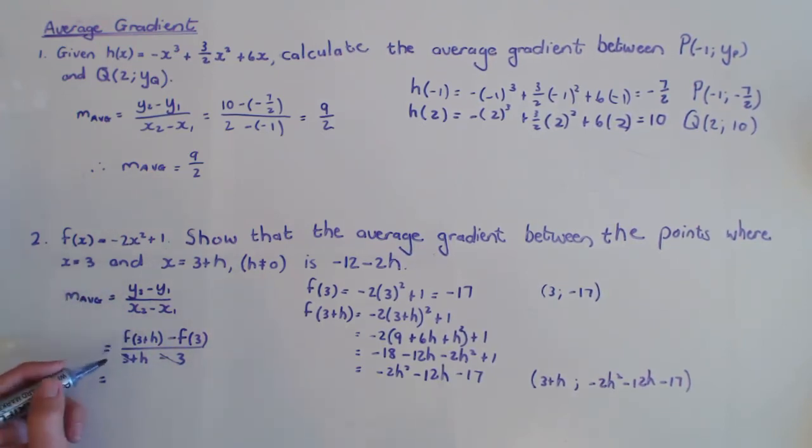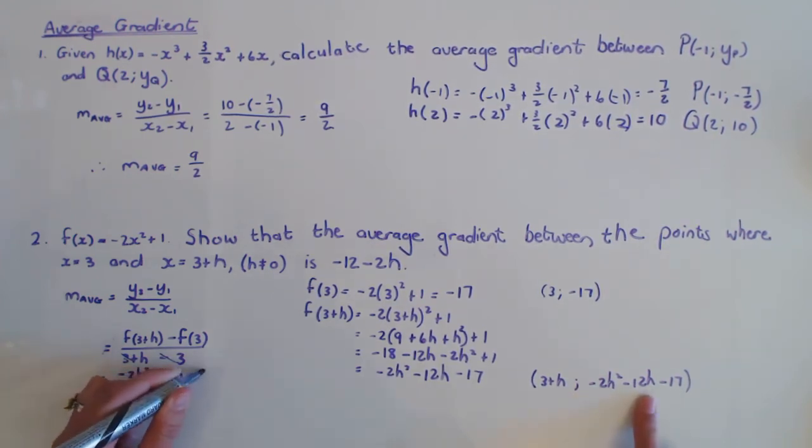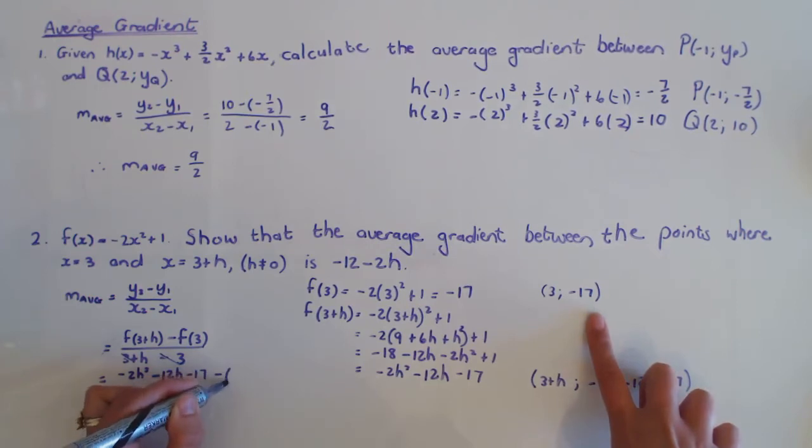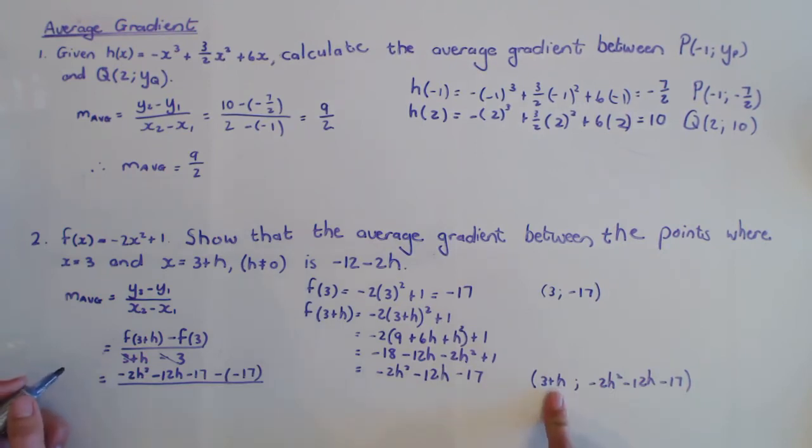So I'm just going to substitute this thing in. This is now this whole sentence, which is -2h² - 12h - 17, and I'm going to subtract -17 there, over 3 + h - 3, I already said, is just going to be h.